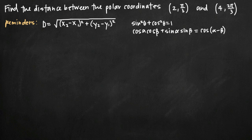Today we're going to be talking about how to find the distance between polar coordinate points. In this particular problem we've been given the coordinate points (2, π/3) and (4, 2π/3). It's important to remember that when we're dealing with polar coordinate points, we're talking about points in the form r, θ — as opposed to Cartesian coordinate points, which are in the form x, y.